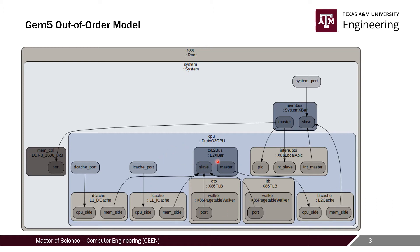We have an L2 crossbar and system crossbar through which the L2 caches, CPU, and DRAM are connected with each other. Apart from this, we have TLBs and interrupt objects as well, which are part of the x86 ISA and are added by default.